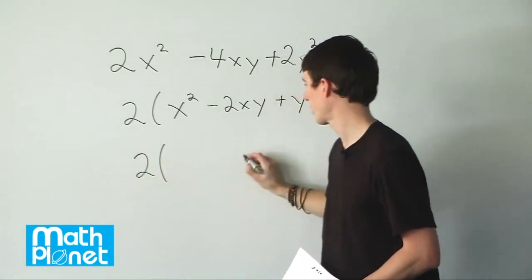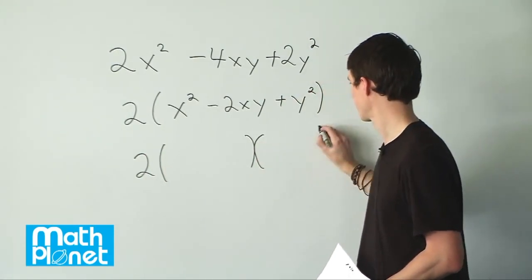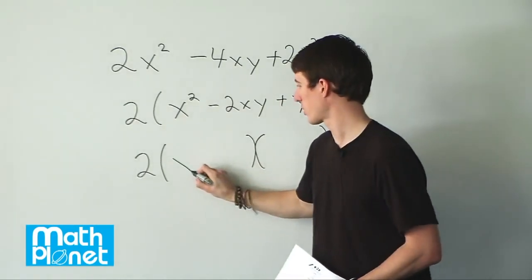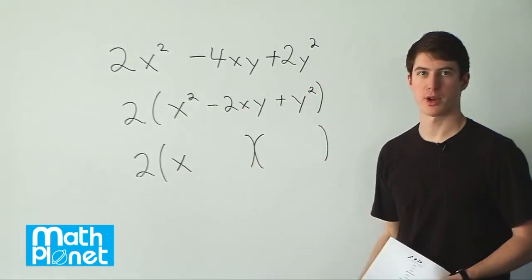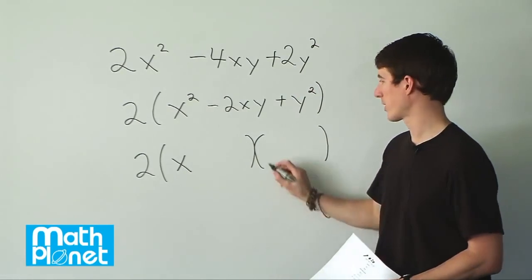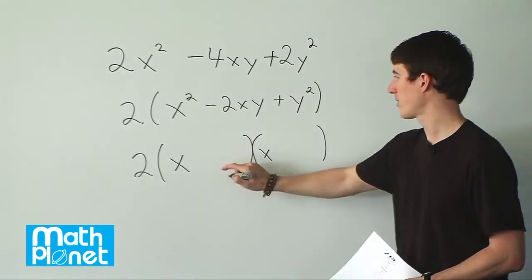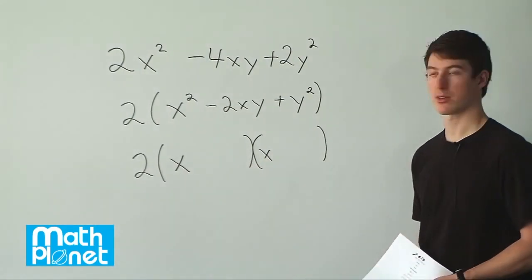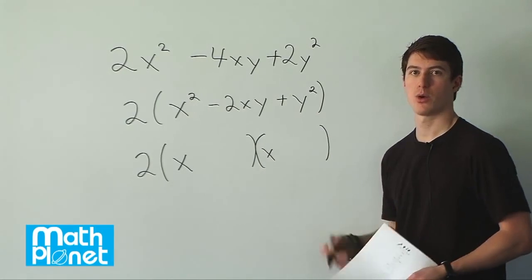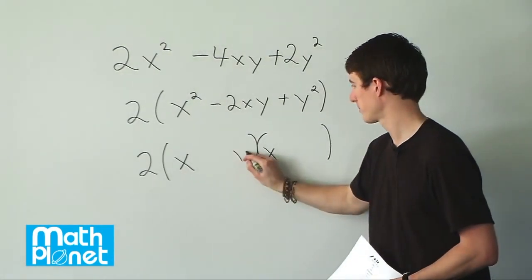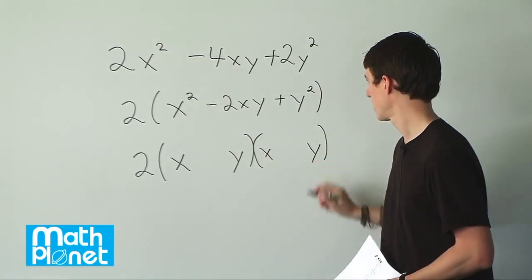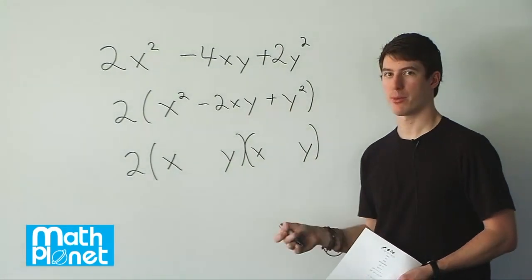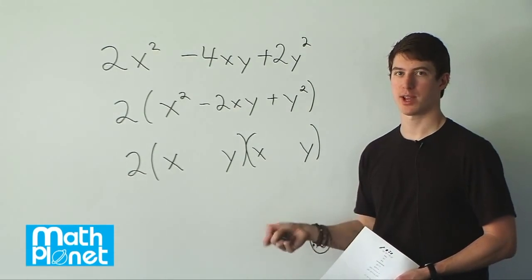Now we're going to have an answer that's 2 times 2 quantities, so we need to figure out what those 2 quantities are. The first term is going to be pretty easy — it's just x times x. The second term is also easy: what times what gives us y squared? Of course, it's just y. So positive y and positive y work, but the other thing that might work is negative y times negative y. Which one do we want to use? We need to look at the cross term to figure that out — it's either two pluses or two minuses.